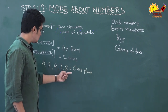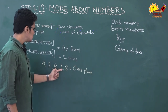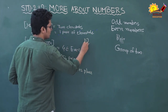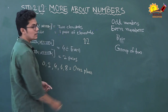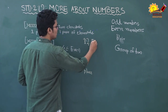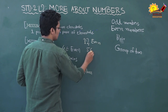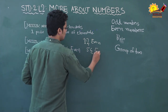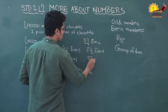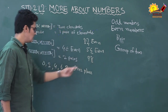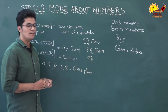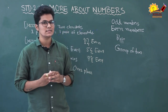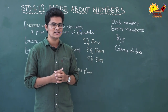The number whose ones place has two, four, six, eight, or zero is an even number. For example, twelve — twelve's ones place is two, so twelve is an even number. Fifty-six — ones place is six, so it is an even number. Ninety-eight — ones place is eight, so ninety-eight is an even number.